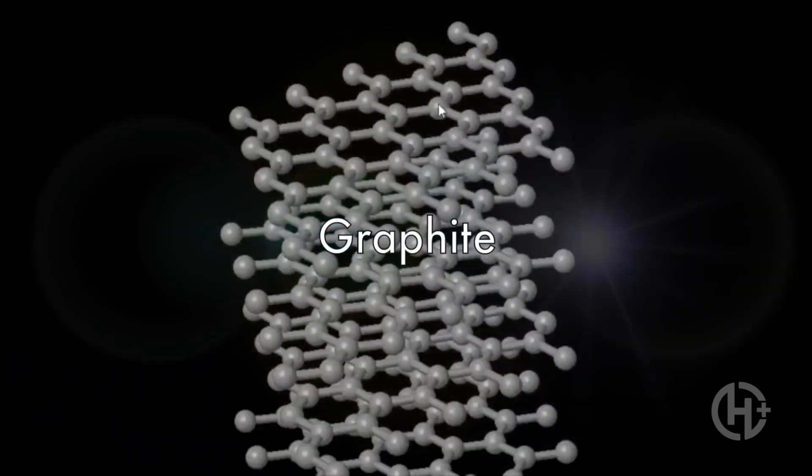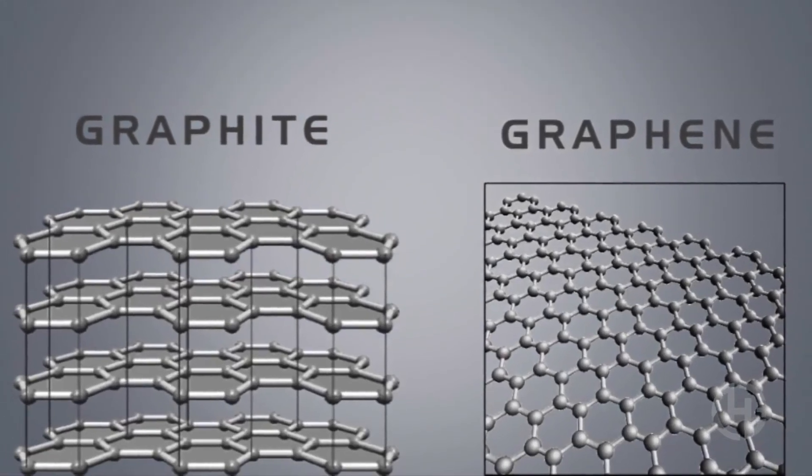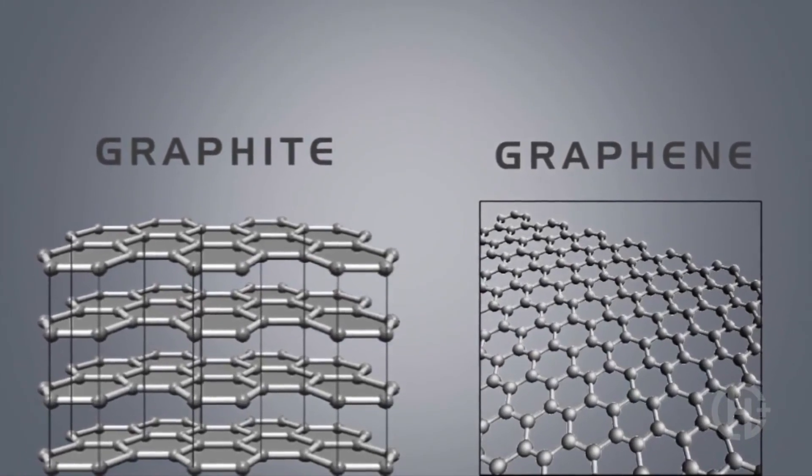After all, the graphite of your pencil is really just tiny flakes of graphene piled up. So we know graphene can take many different shapes, it's just a matter of how we synthesize it on an industrial scale.